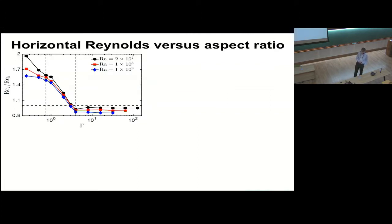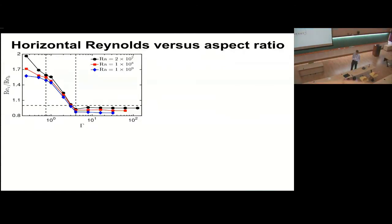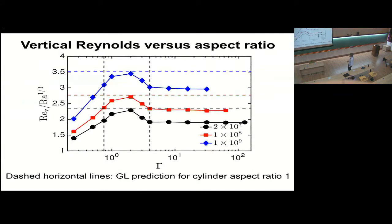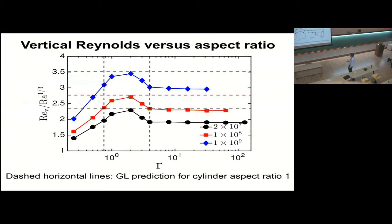Regarding the question about how the Reynolds number is normalized — whether it follows a one-third or one-half scaling: from the graph, it must be close to one-third since the lines are roughly equal, but they don't exactly overlap, so it is clearly not exactly one-third. The exact scaling exponent would need to be determined from the data.